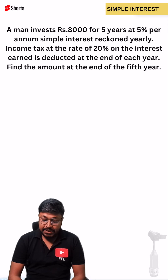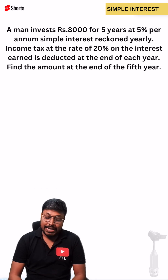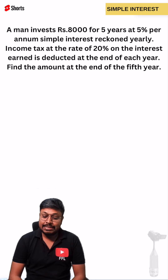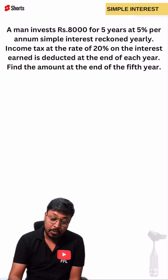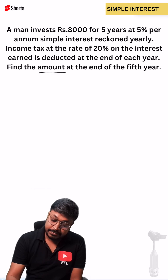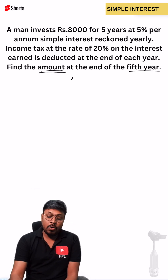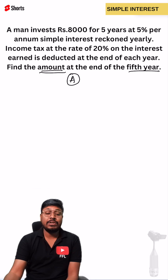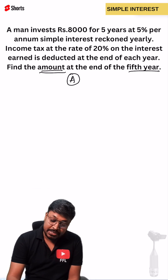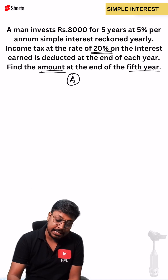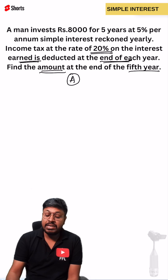A man invests rupees 8,000 for 5 years at 5% per annum simple interest yearly. Income tax at the rate of 20% on the interest earned is deducted at the end of each year. Our target is to find the total amount the person receives after the 5th year. Note that every year, 20% income tax on the interest earned is deducted.